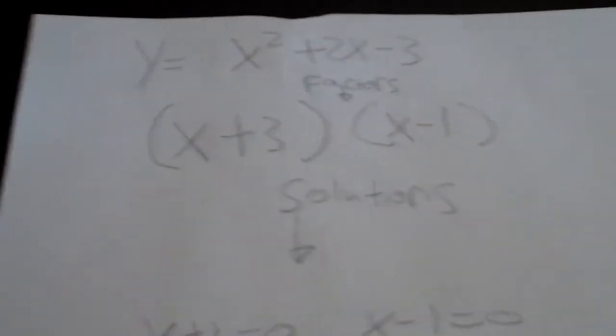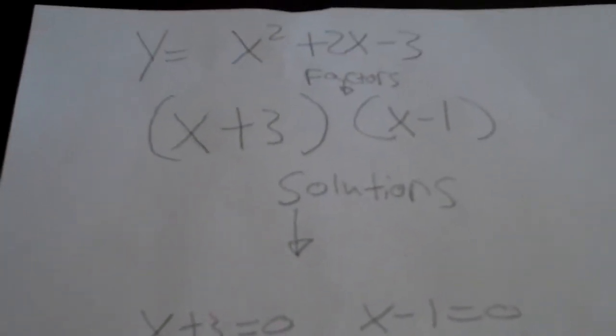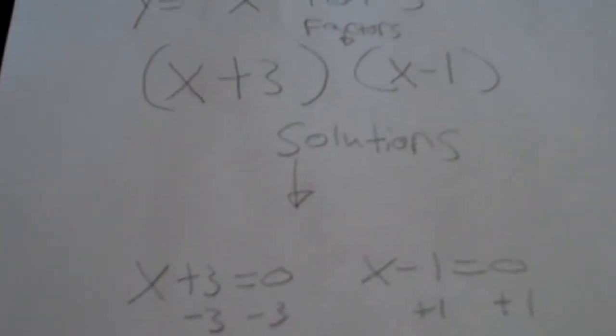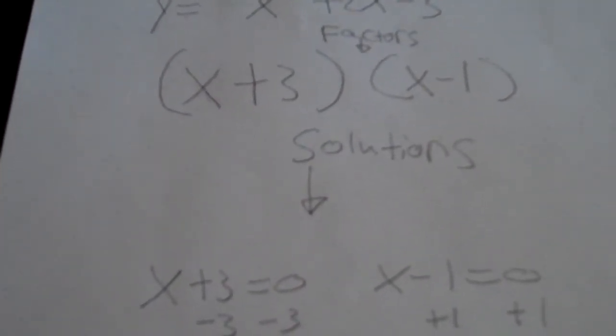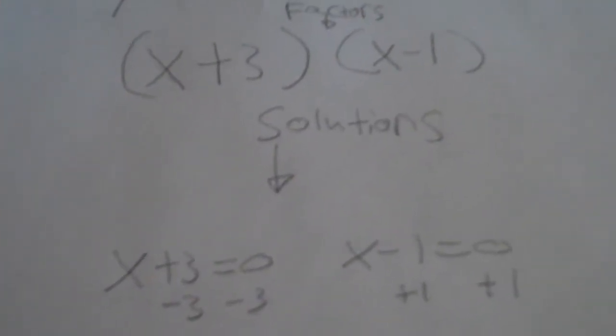Today we're going to be solving the quadratic function y equals x squared plus 2x minus 3. The first thing you want to do is find your factors, which in this case is x plus 3 and x minus 1.